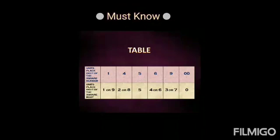This table will be of great help to you. If the unit's place digit of the number is 1, then the unit's place digit of the square root can be 1 or 9. If it is 4, it can be 2 or 8. If it is 5, it will be 5. If it is 6, it can be 4 or 6. If it is 9, it can be 3 or 7. And if it is 0, it will be 0.